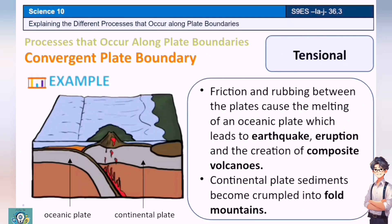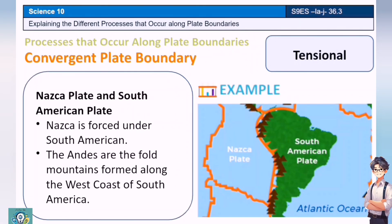Next is the Tensional Convergent Plate boundary. The friction and rubbing between the plates cause the melting of an oceanic plate, which leads to earthquakes, eruptions, and the creation of composite volcanoes. Continental plate sediments become crumbled into fold mountains. One example is the Nazca Plate and South American Plate — the Nazca Plate is forced under the South American Plate, and the Andes are the fold mountains formed along the west coast of South America.